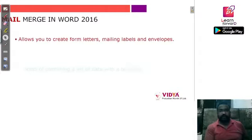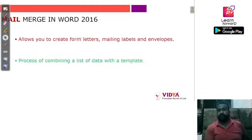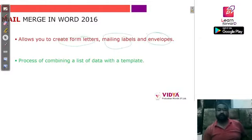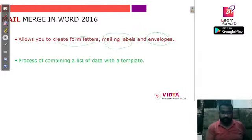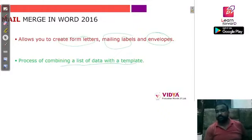Mail merge basically allows you to create form letters, mailing labels, and envelopes. For example, suppose you want to invite your friends, teachers, or relatives to a party. Rather than creating multiple letters for each of them, you can create just one letter and then with the help of labels and envelopes you can create multiple copies of them.